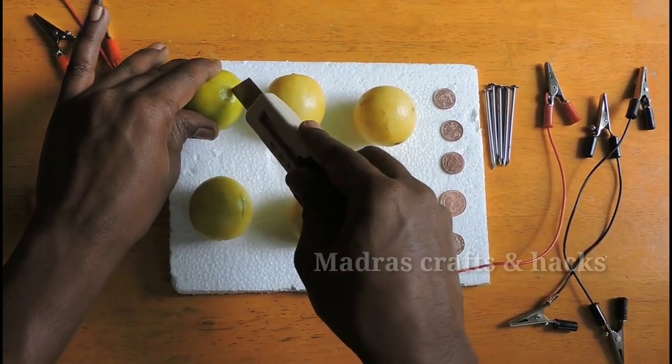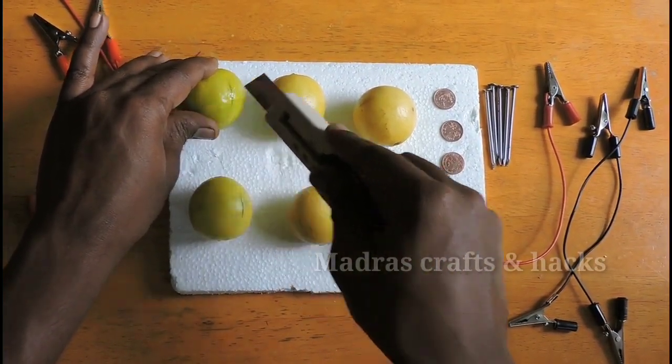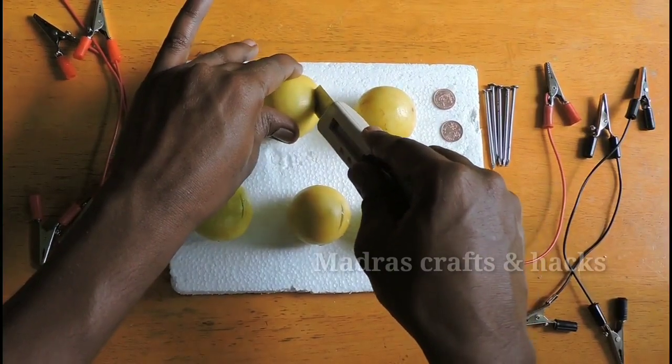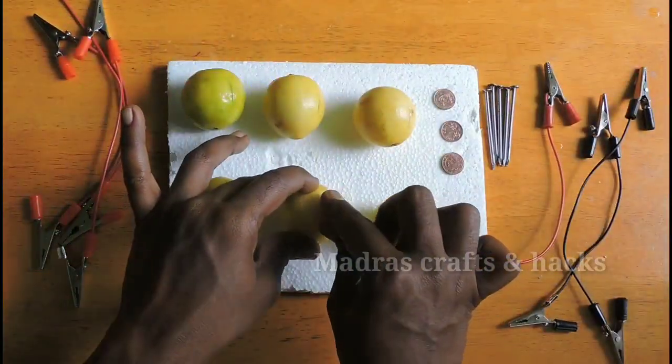Next, we will insert the copper coins and galvanized nails in the lemons, approximately 1 cm apart.